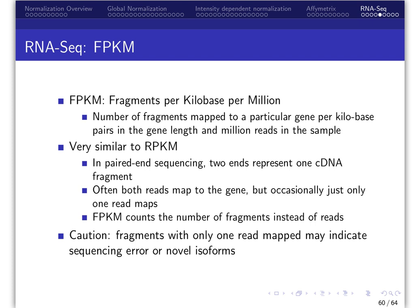In paired-end sequencing, two ends represent one cDNA fragment. FPKM counts the number of fragments instead of the number of reads. So two ends from the same gene that are paired count as one. Note, when using RPKM, that would count as two. Often, both reads map to the gene, but occasionally only one of the two ends map. These are improper pairs. That may indicate more complex events such as novel isoforms or fusion genes.